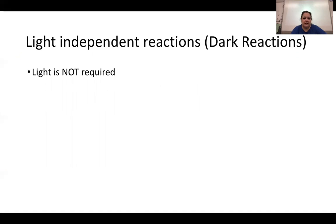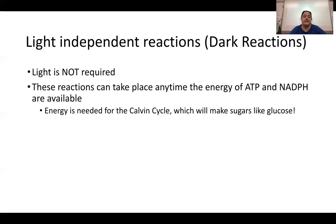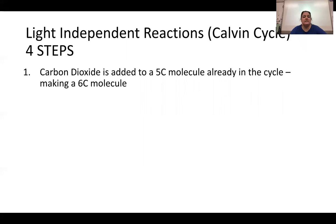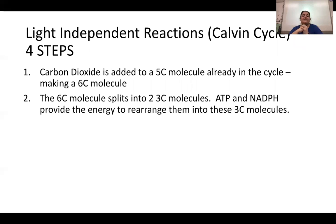The Calvin cycle can happen day or night, whenever ATP and NADPH are available — light is not required. Energy from ATP and NADPH is needed to build glucose by forming covalent bonds. Step one of the dark reactions: carbon dioxide (1 carbon) is added to a five-carbon molecule already in the cycle, producing a six-carbon molecule — similar to how oxaloacetate is already in the Krebs cycle.